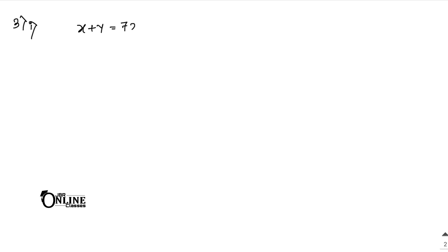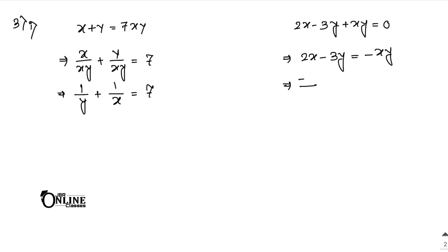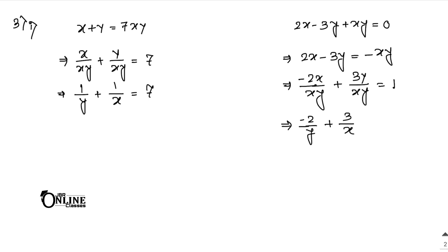Problem 3.1: x plus y equals 7xy, and 2x minus 3y plus xy equals 0. Divide the first equation by xy: 1/y plus 1/x equals 7. For the second equation, rearrange to 2x minus 3y equals minus xy, then divide by minus xy: minus 2/y plus 3/x equals 1.